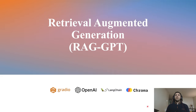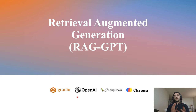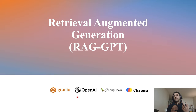For the chatbot I'm going to use four different libraries. First is Gradio, which I'm going to use for designing the user interface. From OpenAI I'm going to use the embedding model and GPT-3.5 as our language model, and finally I'm going to use Langchain and Chroma for designing the RAG side of our chatbot.